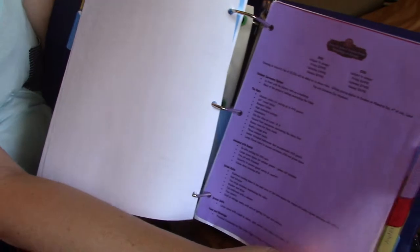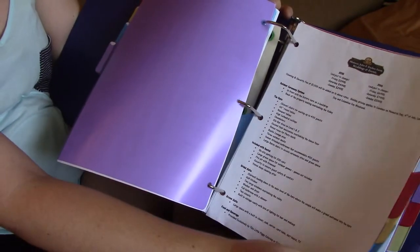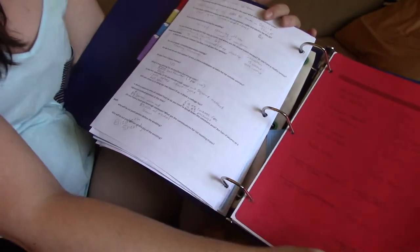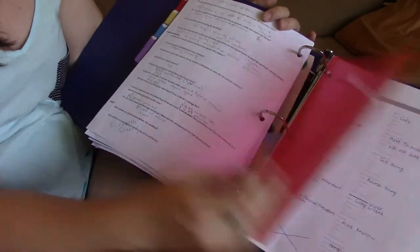The next tab is venue. So I've got all of our venue information, all the questions that we asked them when we initially toured contracts, things like that.